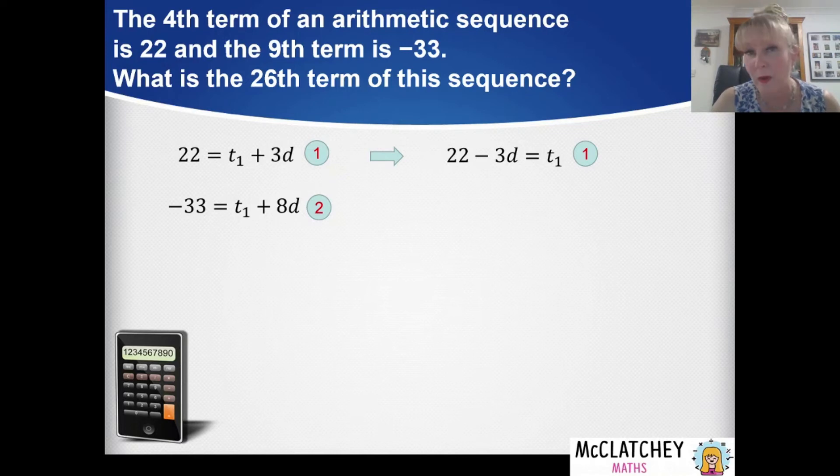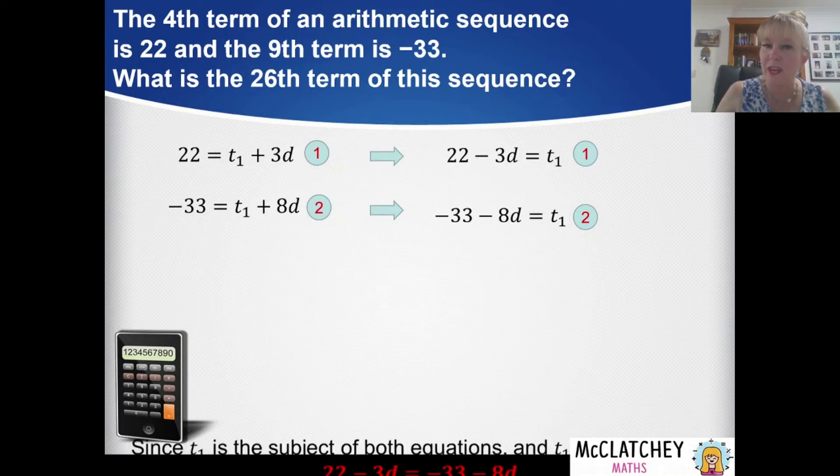And we'll do the same with our second equation. At the moment on that equation we've got 8d added to t1. Let's subtract 8d from both sides and now t1 is the subject of equation 2 as well. So what this means is if I've got something equal to t1 and something else equal to t1, then that means the something and the something else are also equal.